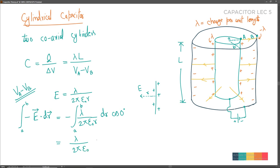Evaluating with upper limit b and lower limit a, we get: λ/(2πε₀) · (ln b - ln a). This is the result of the dV integration from A to B, which gives VB - VA = λ/(2πε₀) · ln(b/a). Using the log subtraction property: ln b - ln a = ln(b/a).